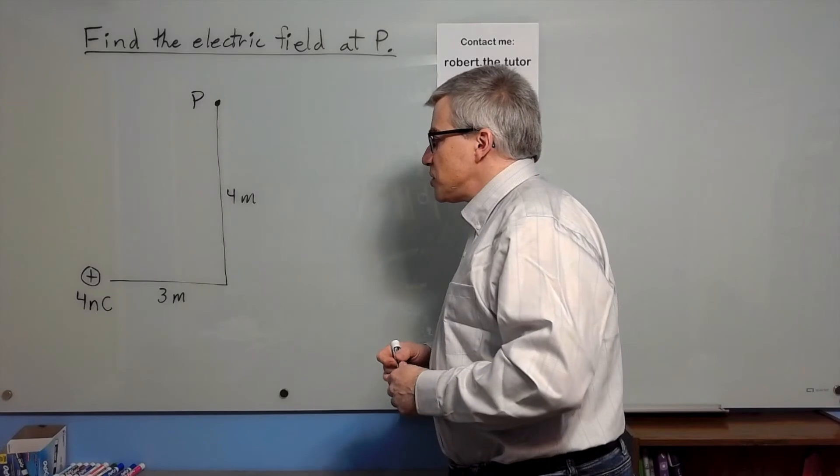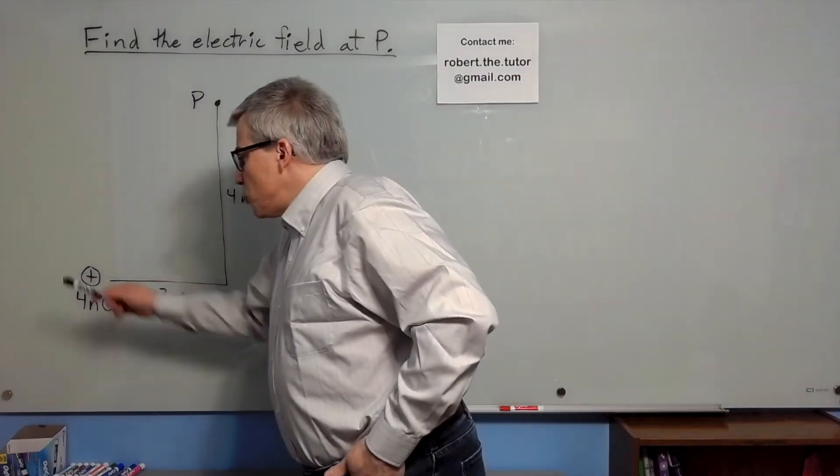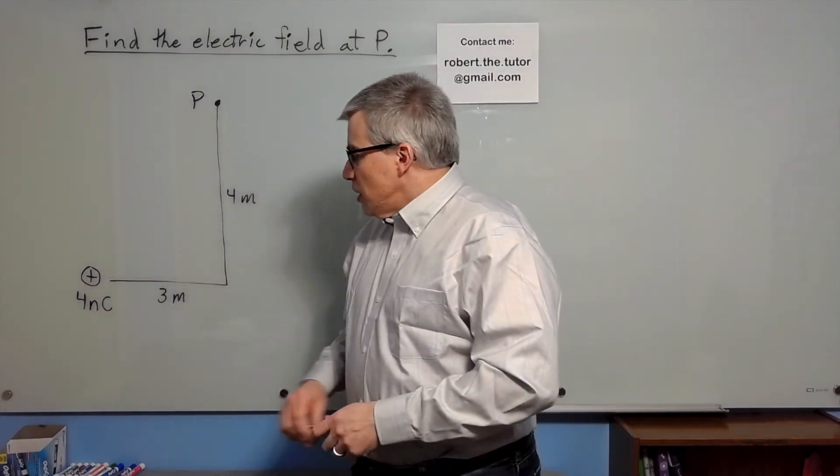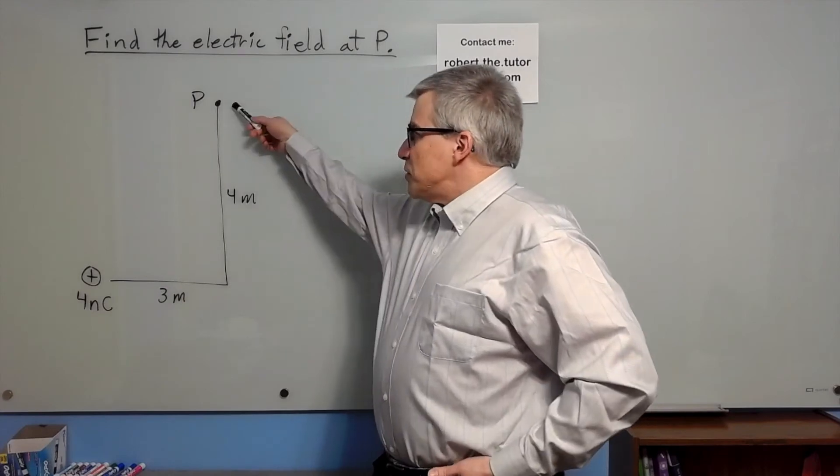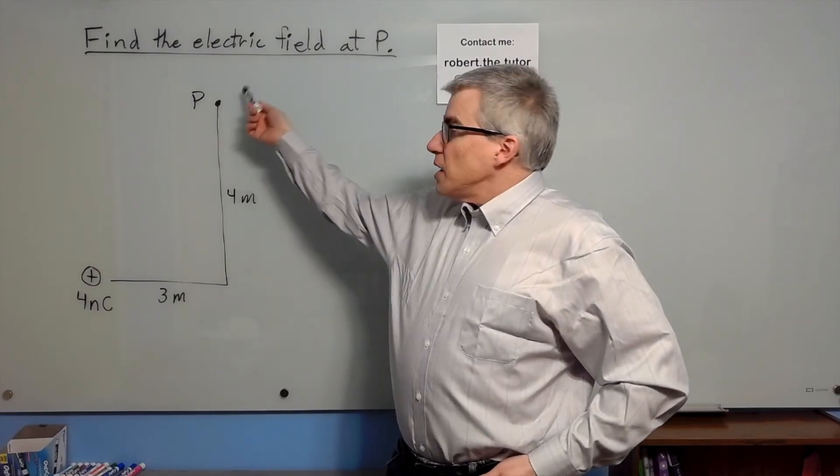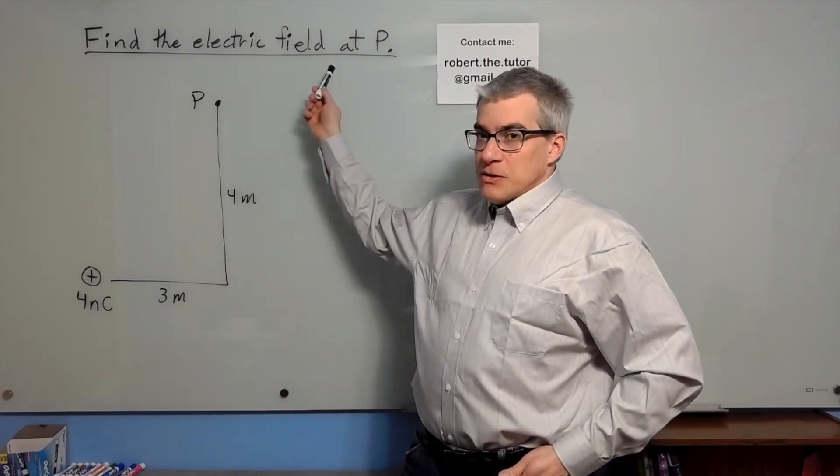Suppose you encounter a problem like this. You have a 4 nanocoulomb charge at the origin, and 3 meters to the right, 4 meters up, is point P. And they ask, find the electric field at P.